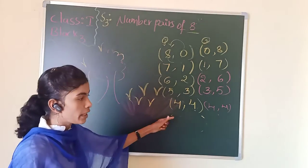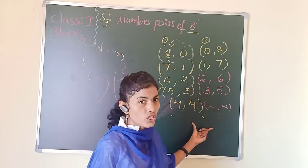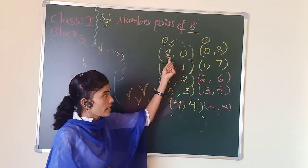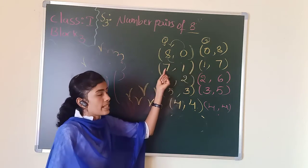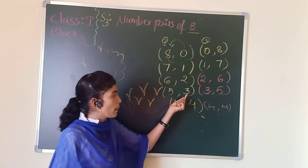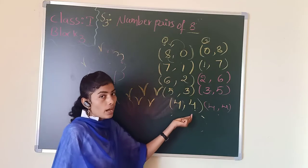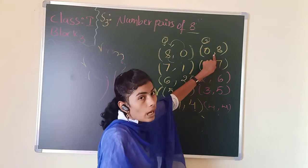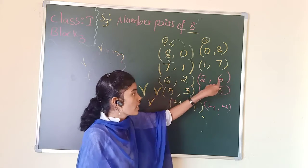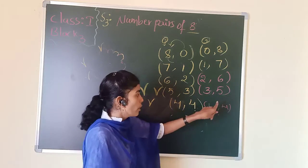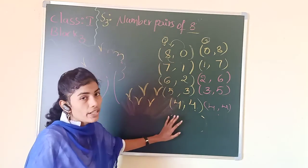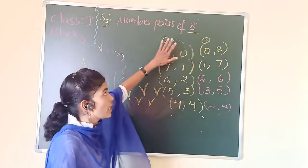We have completed writing number pairs, children. What are the number pairs for 8? Everyone repeat along with me: 8 comma 0, 7 comma 1, 6 comma 2, 5 comma 3, 4 comma 4, 0 comma 8, 1 comma 7, 2 comma 6, 3 comma 5, 4 comma 4. These are the different number pairs to make 8 in order.